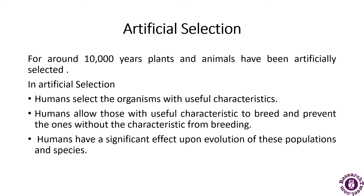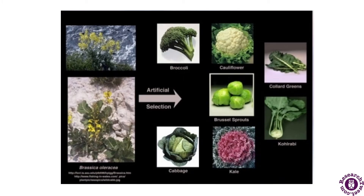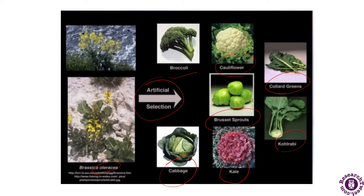Humans have a significant effect upon the evolution of these populations and species, and the process of natural selection is also involved. For plant examples, we look at Brassica — you can see there are many artificially created plants developed by humans, including broccoli, cauliflower, Brussels sprouts, and cabbage. These are some of the artificially selected plants.